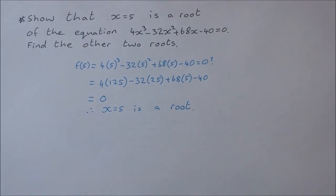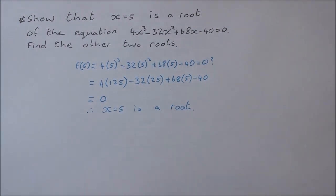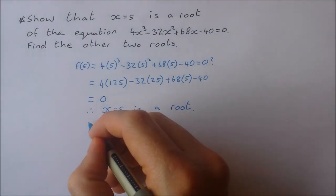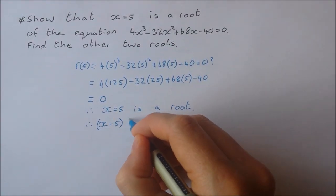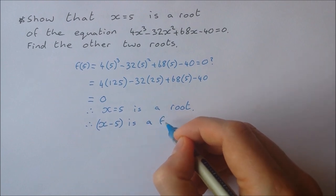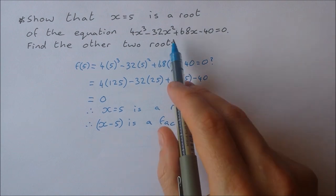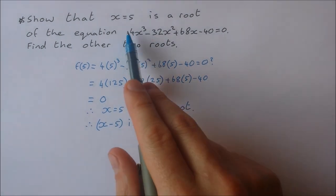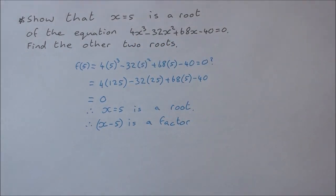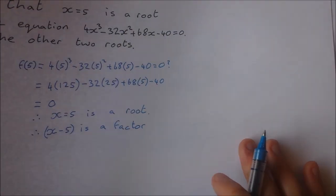We want to find the other two roots of this cubic. If we have one root, we have one factor, so therefore x minus 5 is a factor. If we have one factor of a cubic, to find the other two factors we divide this factor into our cubic. We'll be left with a quadratic and then we'll solve that to find the other two roots.